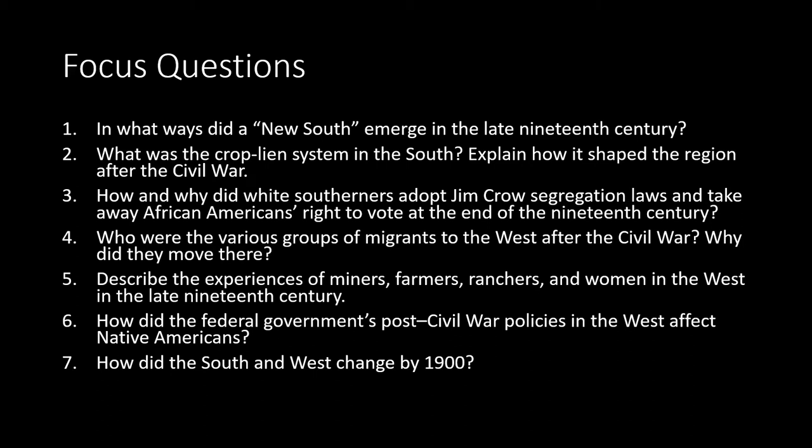In what ways did the New South emerge in the late 19th century? What was the crop lien system in the South, and explain how it shaped the region after the Civil War. How did white settlers adopt Jim Crow segregation laws and take away African Americans' rights to vote at the end of the 19th century?